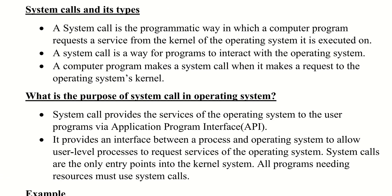Next we are going to deal with system calls and their types — a very important topic. A system call is the programmatic way in which a computer program requests a service from the kernel of the operating system it is executed on. When a program requires a service from the operating system's kernel, it requests through a system call. It is a way for programs to interact with the operating system.